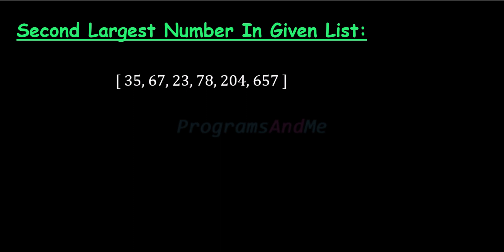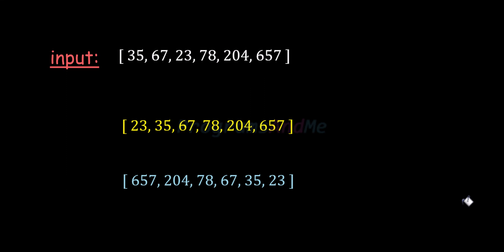First we will sort the given list. We can sort the list in ascending order or descending order. When we sort the list in ascending order, the second last element will be the second largest element in that list. The last element of the sorted list will be the largest element, and the second last element will be the second largest element of the given list.